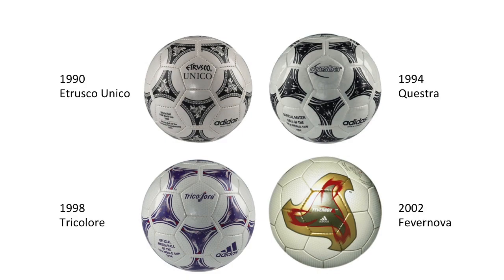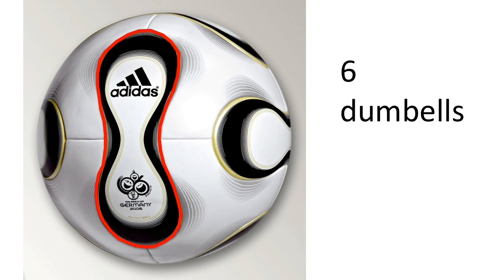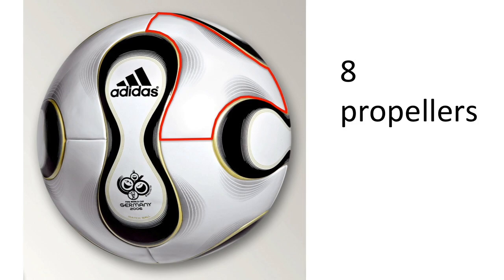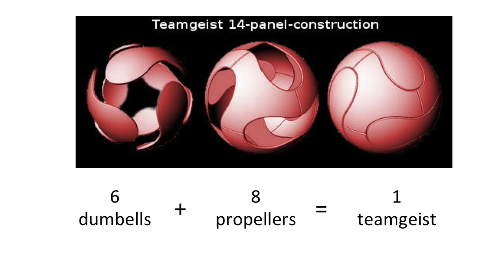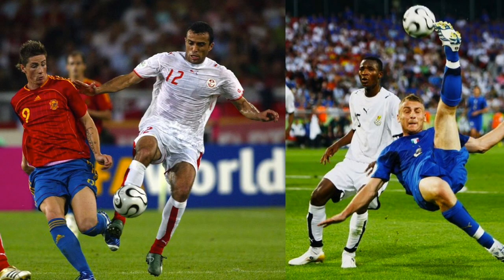This all changed with the 2006 Teamgeist in Germany. It has six dumbbell-shaped panels and eight propeller shapes. Unlike the Telstar's panels which are stitched together, the Teamgeist panels are thermally bonded. This ball received criticism because of its erratic flight.